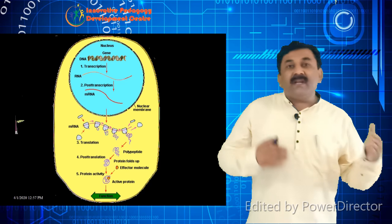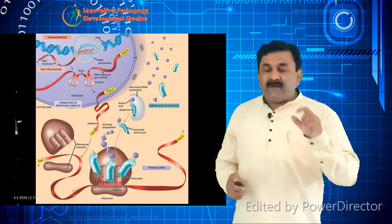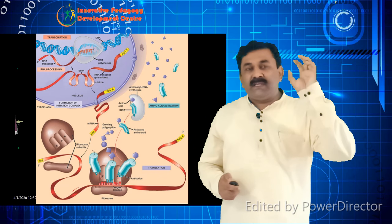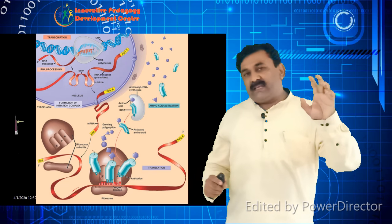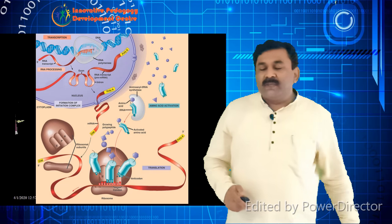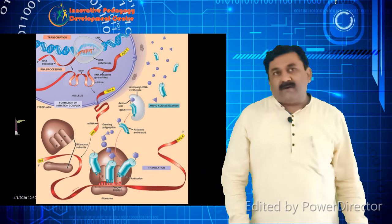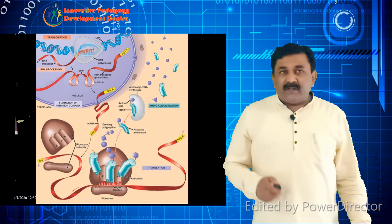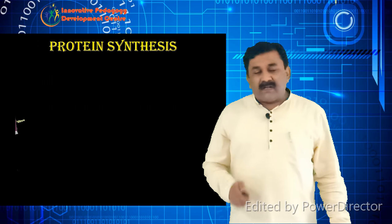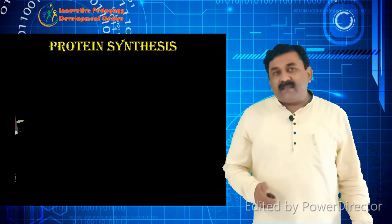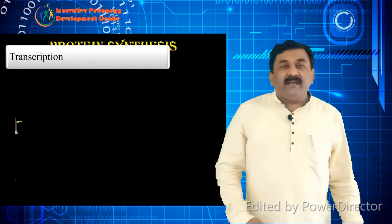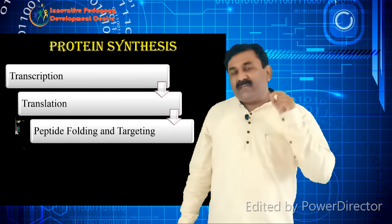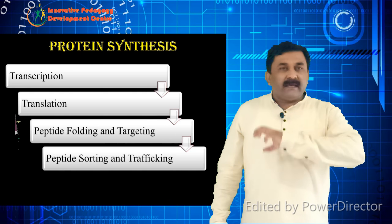In prokaryotes, transcription and translation will go hand in hand — there will be no barrier, unlike eukaryotes where the nucleus is devoted for transcription only and translation is carried out in the cytoplasm. This entire process is called protein synthesis, or may be referred to as gene expression, or the central dogma of the universe. This protein synthesis process involves transcription, translation, peptide folding and targeting, sorting and trafficking, and finally peptide assembling to form the active protein — these are the phases through which the entire gene expression process is carried out.